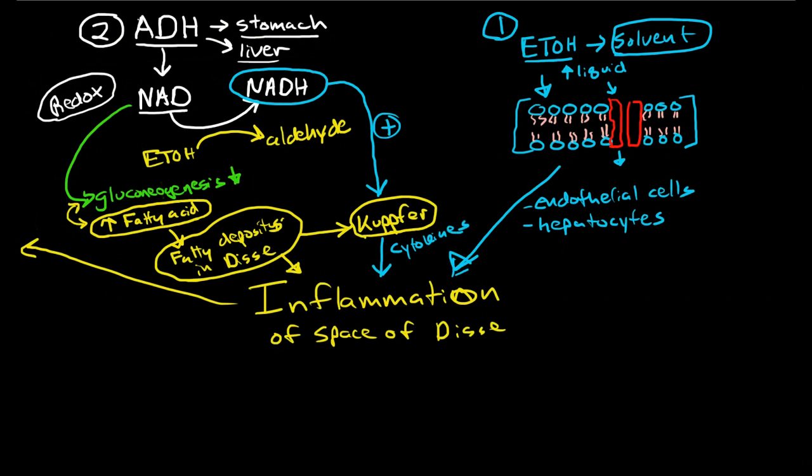So, really, the issue here is there's two effects of high levels of alcohol in the liver. One is alcohol working as a solvent. And then number two is the alcohol dehydrogenase system suppressing gluconeogenesis and thereby increasing fatty acid secretion, which directly starts a process of inflammation. And then also NADH stimulating Kupfer cells to increase the inflammation in the space of Disse.